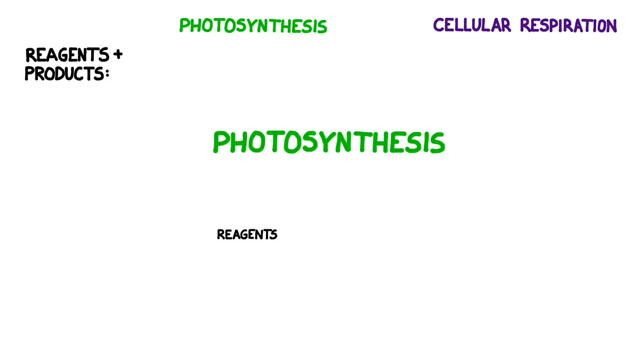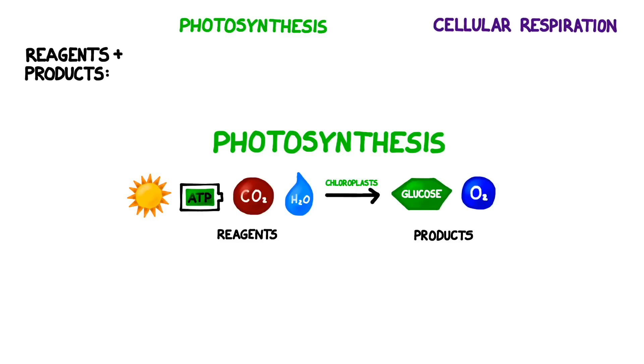Looking at the reagents and products often helps make the relationship seem more clear. In photosynthesis we put sunlight, ATP, carbon dioxide, and water into special compartments in the chloroplasts. Photosynthesis uses these reagents to convert the carbon from CO2 into a sugar called glucose in a process known as carbon fixation. We also produce oxygen as a waste product.